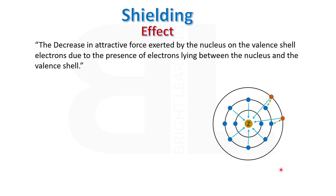Electrons present between the valence electron and the nucleus are called inner electrons or core electrons. These inner electrons create a shield or hindrance between the nucleus and the valence electron — the phenomenon that results is called shielding effect.